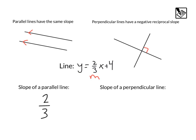A slope of a perpendicular line would be the opposite sign. That's going to be negative, since our slope up here is a positive. And then instead of 2 over 3, we're going to take the reciprocal 3 over 2.